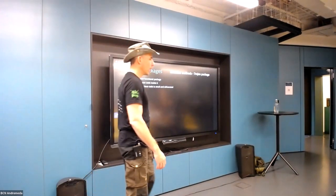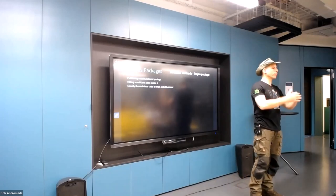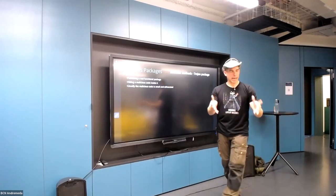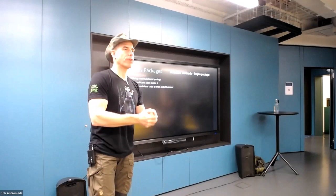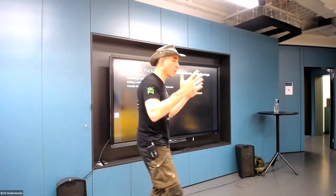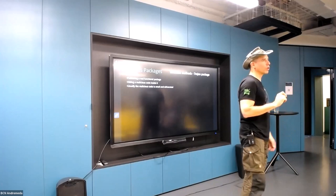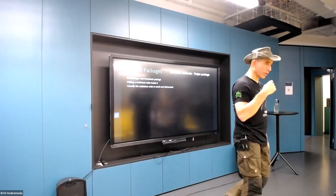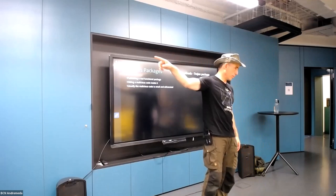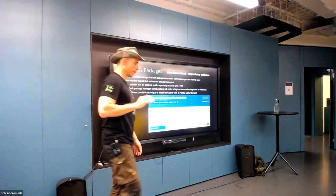Trojan packages: someone creates a very nice utility and distributes it for free, but with added malicious functionality. There was a hacker who provided a library to steal Discord tokens, distributed everywhere on the darknet. People used it, loved it, and it worked. But there was a tiny extra function: every stolen token was not only delivered to the user of the library but also to the library's inventor. A supply chain attack between hackers.